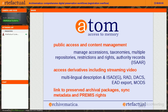AtoM, which is part of the complete package if you're using Archivematica, is recommended for public access and content management — to manage your accessions, taxonomies, multiple repositories, restrictions and rights, and your authority records in ISAAR. We recommend AtoM for access derivatives that can be created using Archivematica. AtoM also allows for streaming video. AtoM has multilingual description, ISAD, RAD, DAX, EAD export, and MODS, and there is a link in your AtoM description to your preserved archive packages created using Archivematica, with synced metadata and PREMIS as well.